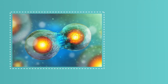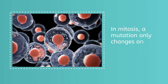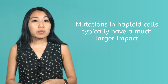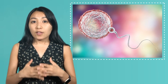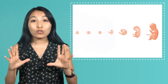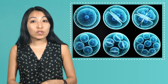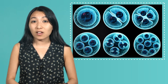An error that occurs when DNA is copied is called a mutation. With cancer as an exception, mutations that occur during mitosis typically have little effect because the mutation only changes one cell out of trillions. However, mutations in haploid cells typically have a much larger impact. Remember, when haploid cells combine, they form the blueprint for an entire new organism. All other cells are created from the division of this original cell, so any errors in the code are literally translated into every cell of the body.